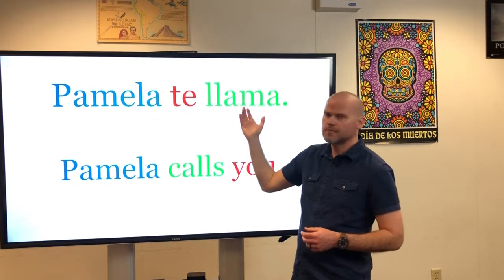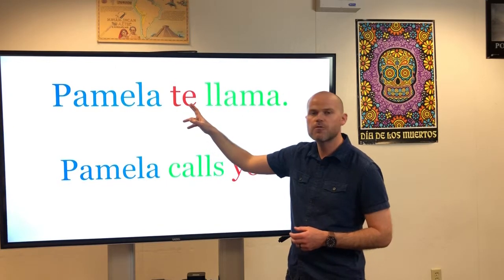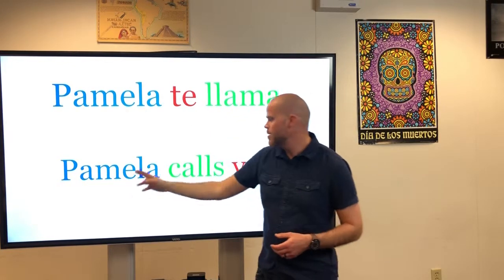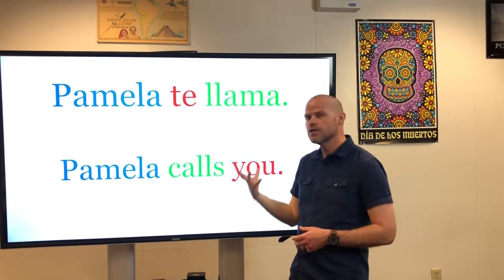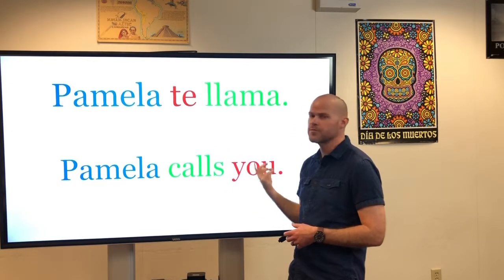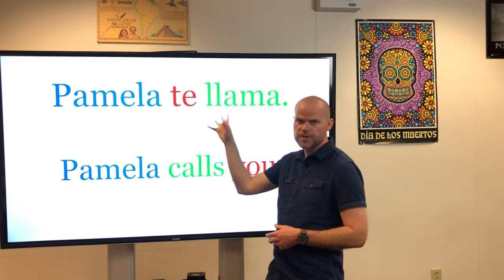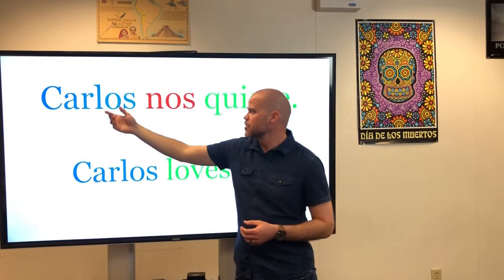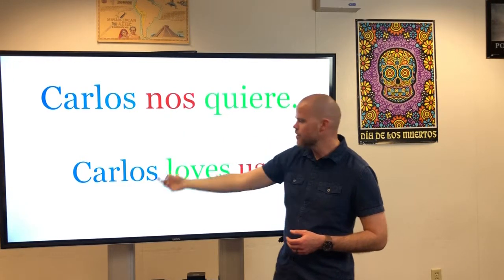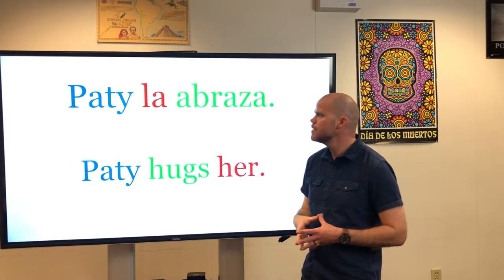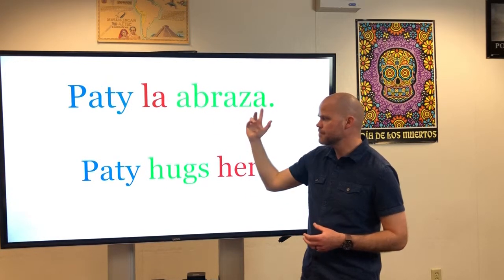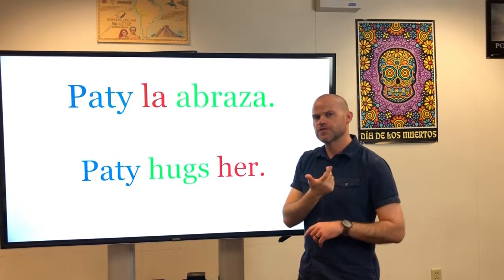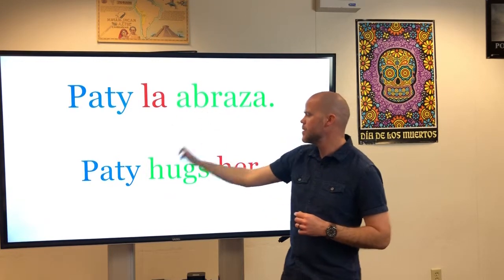Pamela te llama — Pamela calls you. Now we're seeing direct object pronouns referring to people. Notice in English the direct object pronoun goes after the verb, but in Spanish with only one verb it goes before: Pamela calls you. Carlos nos quiere — Carlos loves us. Patti la abraza — Patti hugs her. The la here is singular and feminine, referring to a female person.